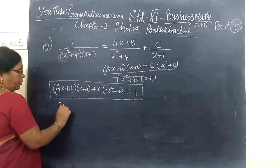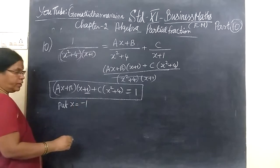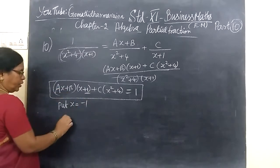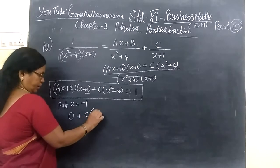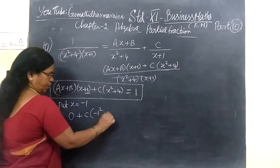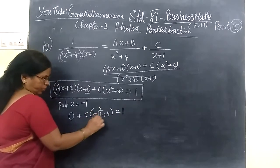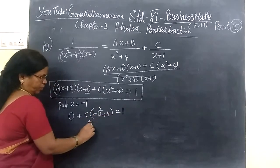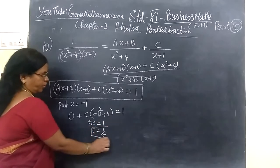Now put x equal to -1. In the classroom you are substituting minus 1 to eliminate the denominator. 0 plus B bracket, minus 1 square plus 4, this is equal to 1. Then 5B equals 1. This gives C equal to 1 by 5.